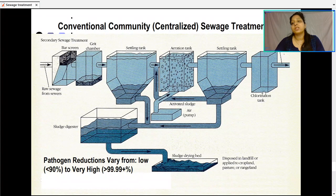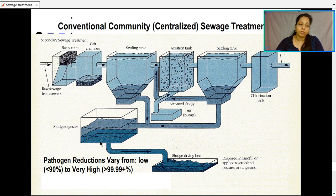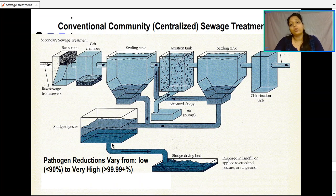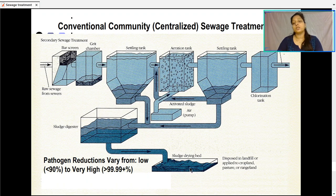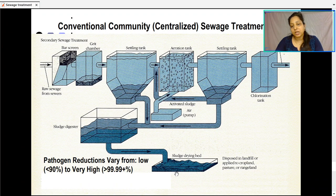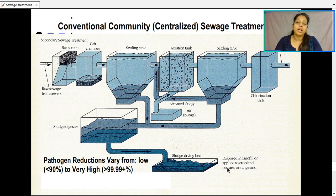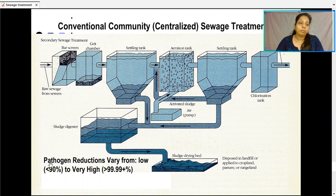Finally, the relatively purified water is sent to tertiary treatment — chlorination and disinfection — before it can be mixed with a stream. The sludge, which is mostly solid with much water removed, is further digested by microorganisms in the sludge digester, then sent to the sludge drying bed where it is sprayed in thin layers and the remaining water is dried up in the sun, converting it to a soil-like material. This dried sludge can be disposed in landfills or applied to cropland, pasture, and rangeland where vegetation can be consumed by cattle. With this treatment plan, there is a reduction in pathogens from less than 90% up to more than 99.9%.